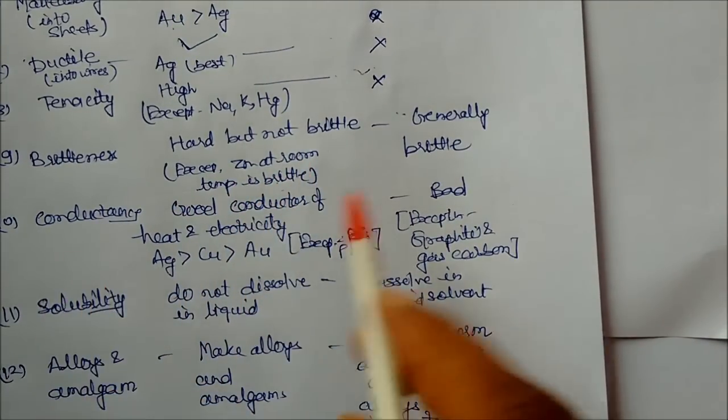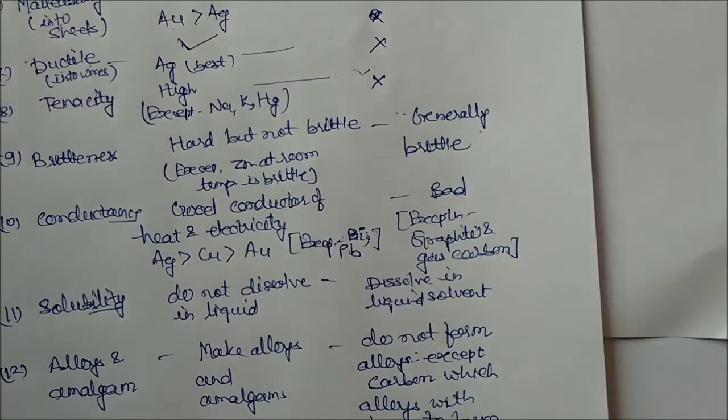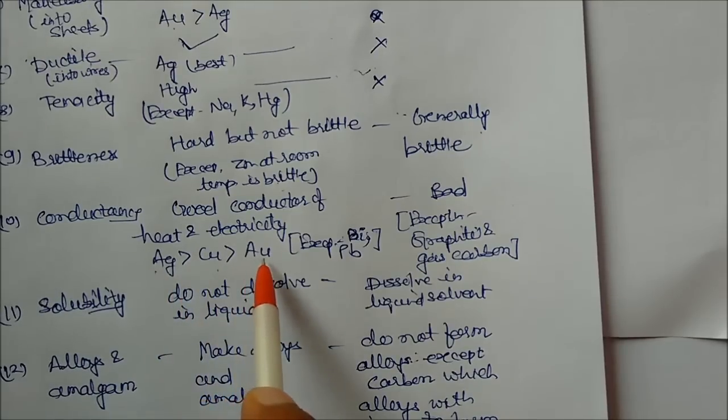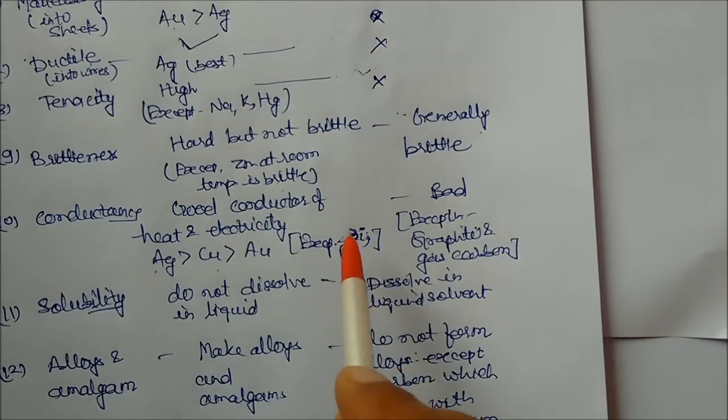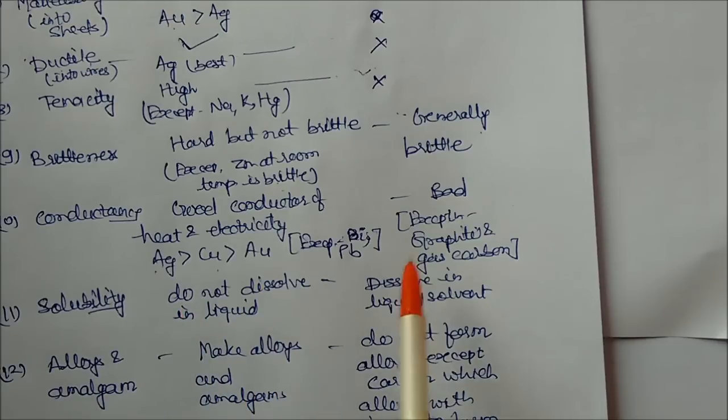Conductance: metals are good conductors of heat and electricity. Silver is the best followed by copper, then gold. Exceptions: bismuth and lead are bad conductors. Nonmetals are very bad except graphite and carbon—they are good conductors.